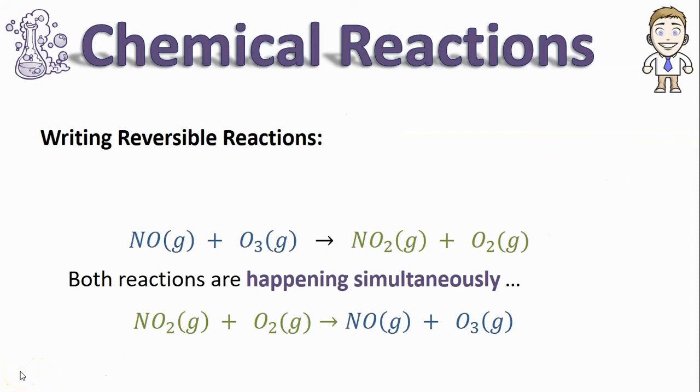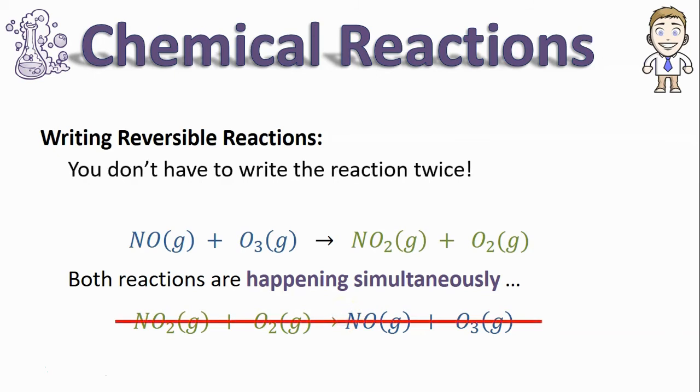Now, at first, this might seem kind of annoying and make you think for reversible reactions, you have to write it one direction and then also write the reverse of that every single time you write this chemical equation. Luckily, you don't have to write the reaction twice.